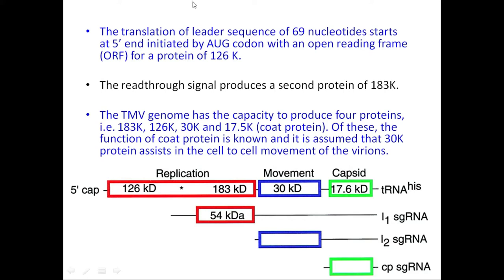Translation starts with the AUG codon to produce a 126 kd protein, and the read-through signal produces a second protein of 183 kd because the stop codon is very often read through. TMV genome thus has the capacity to produce four proteins: 126 kd, 183 kd, 30 kd, and 17.6 kd. The coat protein function is confirmed, and the 30 kd protein is assumed to help in cell-to-cell movement.